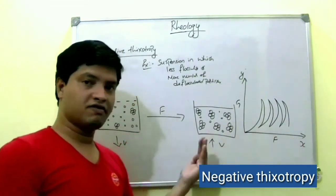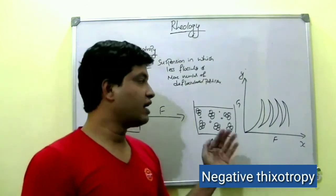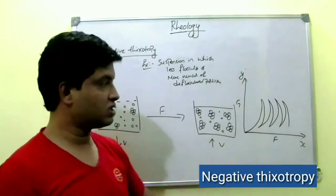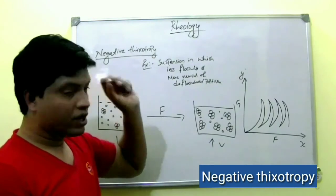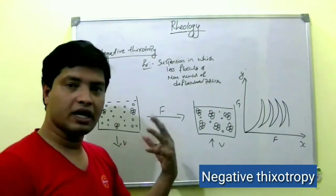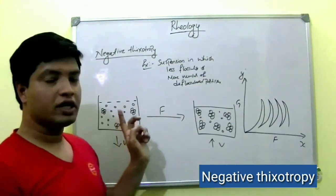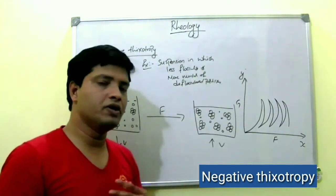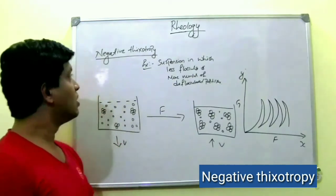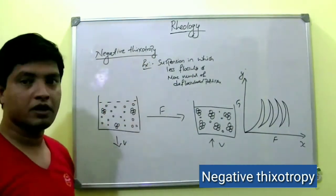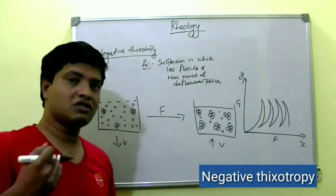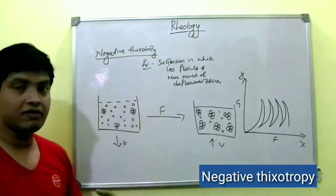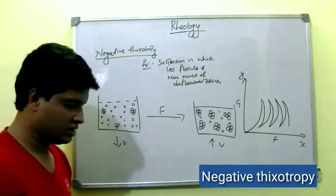In the graph for negative thixotropy, as shear stress increases, viscosity increases. When you leave the shear stress, some floccules break and viscosity decreases. When stress is applied again, more floccules form readily and viscosity increases again — the graph shifts accordingly. There is a limit though: once all deflocculated particles have formed floccules, further stress causes no further increase in viscosity. In thixotropy, viscosity decreases as shear stress is applied; in negative thixotropy, viscosity increases as shear stress is applied.